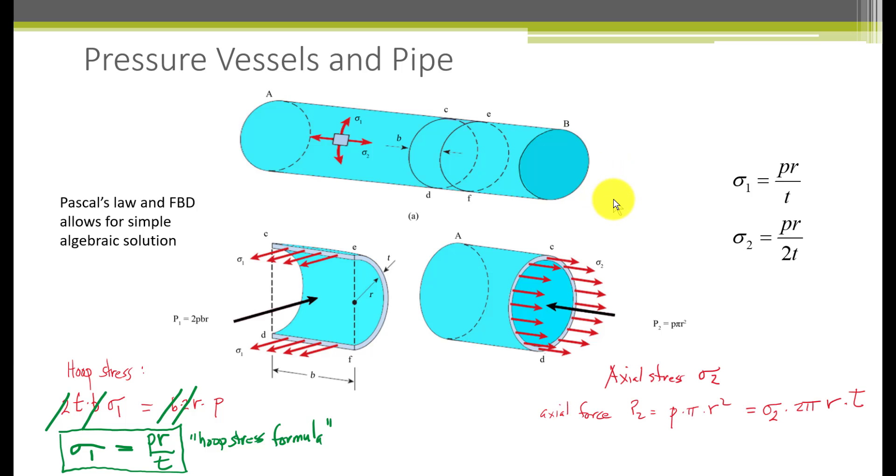The axial stress is just about as simple to derive. We balance the pressure force, indicated by the black arrow, that's just the area times the pressure, p2 is equal to the pressure times pi r squared. And that is equal to the force in the steel container across this section, and that's sigma 2 times the circumference, 2 pi r times the thickness. Because we've made the thin wall pressure vessel assumption, these approximations to the actual area are sufficiently good. After cancellation, we get sigma 2 is equal to pr over 2t, summarized again here.